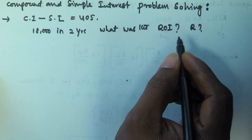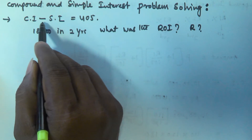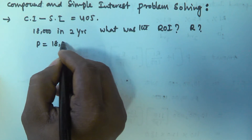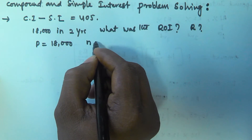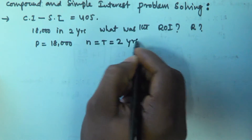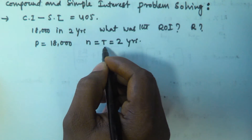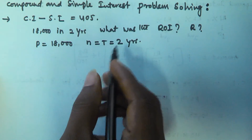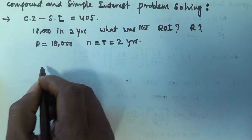So we have to find the value of R. The given principal amount is 18,000. The N value or T value is equivalent to 2 years — in compound interest we use N and in simple interest we use T. So N and T are both equal to 2.